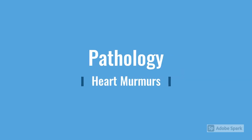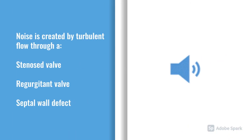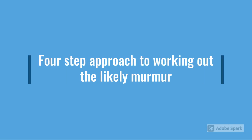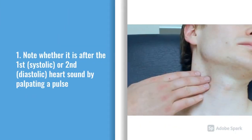Moving on to key pathology: murmur noise is created by three things — either blood flow through a stenosed valve, which is a narrowed valve; blood flow through a regurgitant, sometimes called an incompetent valve, which is very floppy; or septal wall defects. When you think you've detected a murmur, use a four-step approach. First, note whether it's after the first heart sound or after the second heart sound by palpating the pulse — so it's either a systolic or a diastolic murmur.